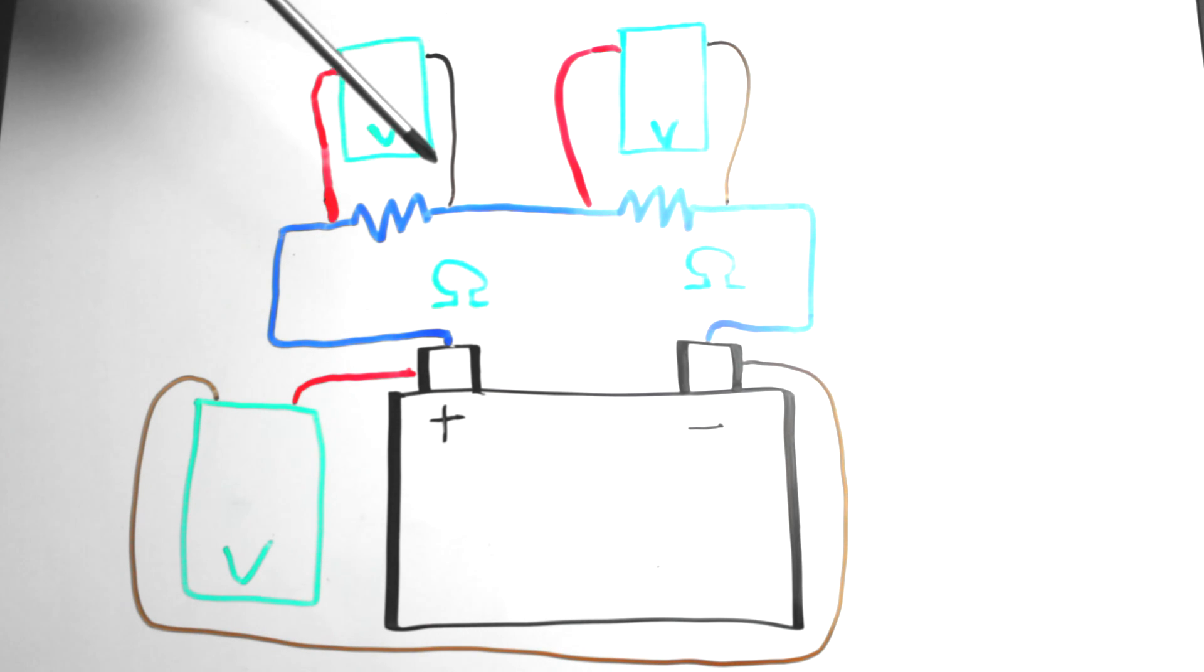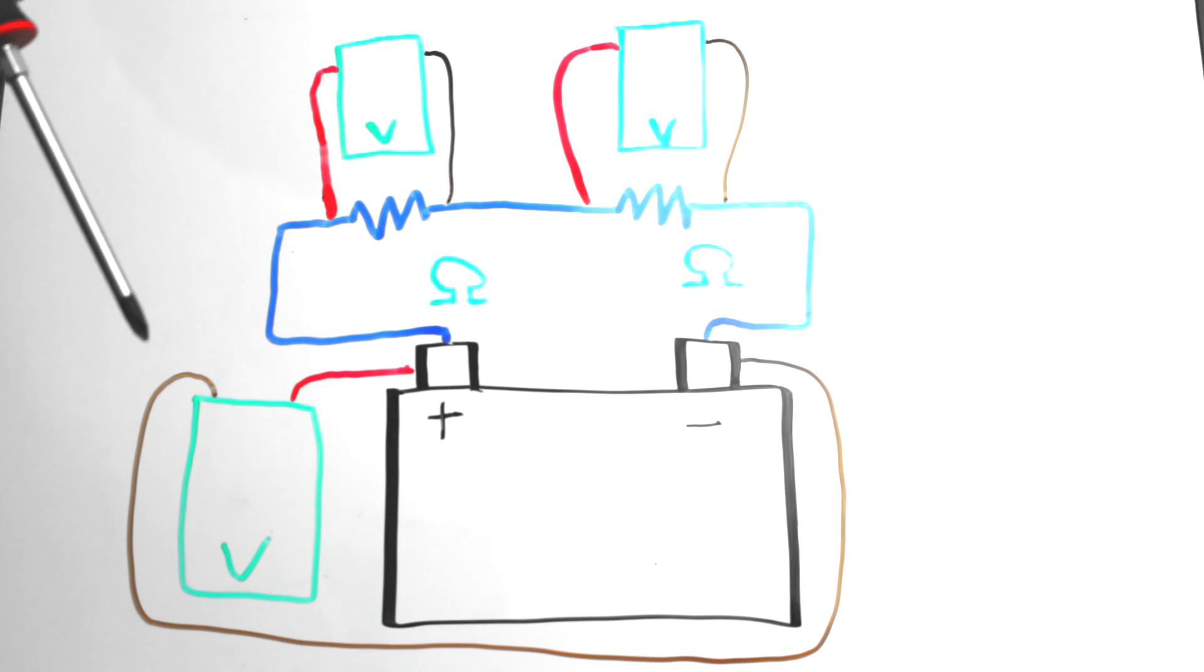That Ohm's Law video was super basic and only used one resistor. In this lesson we're going to be looking at two resistors in series. We've also got our multimeters out and we're going to be testing for volt drop.